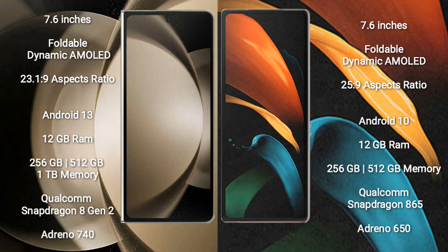The Samsung Galaxy Z Fold 5 runs on the Android 13 operating system, while the Samsung Galaxy Z Fold 2 runs on Android 10. The Z Fold 5 comes with 12GB RAM and 256GB, 512GB, or 1TB internal storage, powered by a Qualcomm Snapdragon 8 Gen 2 processor with Adreno 740 GPU. The Z Fold 2 comes with 12GB RAM and 256GB or 512GB storage, with a Snapdragon 865 processor and Adreno 650 GPU.